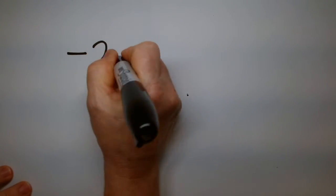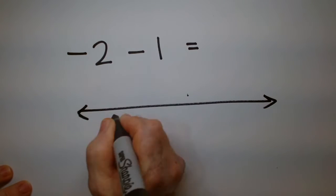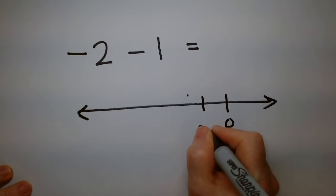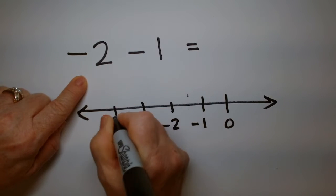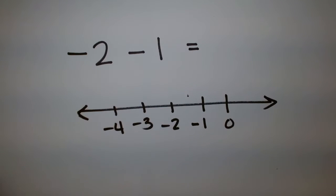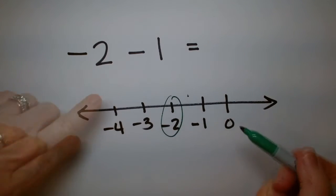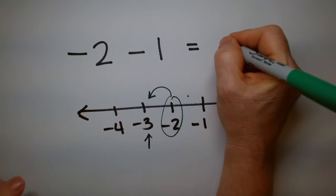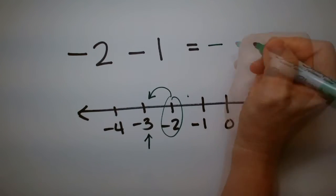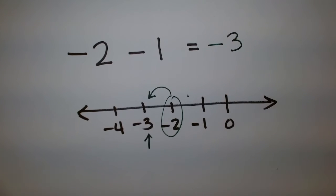Let's try another one. What if I have minus 2 minus 1? On our number line, here's 0, then minus 1, minus 2, minus 3, minus 4. So we're at minus 2, and then it says go even more negative — go further from 0, one hop. Since both of these are negative, you put down a negative and combine 2 and 1 to get minus 3.